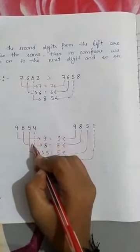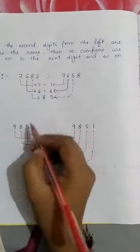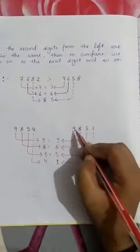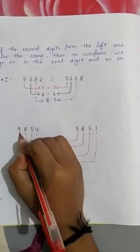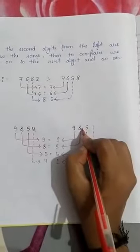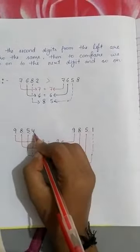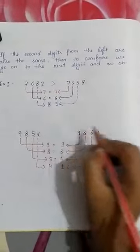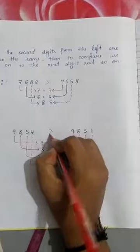Like this, we can compare 4-digit, 5-digit, and 6-digit numbers. See the example: 9854 and 9851. There is 9 at the thousands place — 9 and 9, both are the same. We go to the next: 8 and 8, both are the same. We go to the next again: 5 and 5, also the same. Now we go to the next — it is 4 and it is 1. Which is greater? 4 is greater, 1 is smaller. It means 9854 is the greater number. Understood?